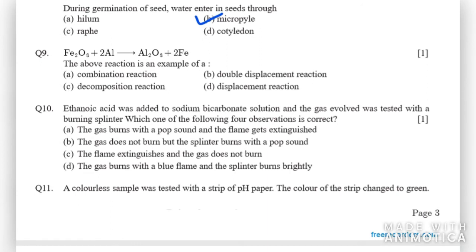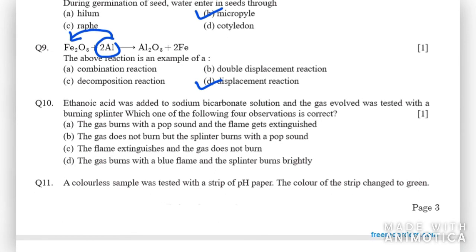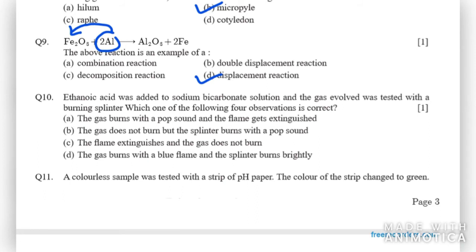Moving on to question number 9. We have a reaction here. We need to tell which example this is. As you can see, we have aluminum and iron oxide here. Aluminum is displacing Fe. So this is a simple displacement reaction. D part is the right answer. Next one says, ethanoic acid was added to sodium bicarbonate solution and the gas evolved was tested with a burning splinter. Which observation is correct? Gas burns with pop sound? Flame gets extinguished? The gas does not burn but splinter burns with pop sound? Or flame extinguishes and gas does not burn? As it forms carbon dioxide, the flame extinguishes and the gas does not burn.